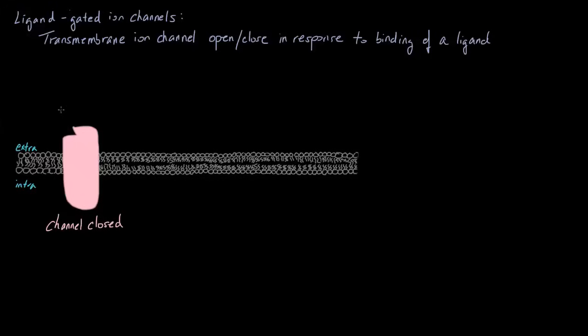So let's say we have a ligand that looks like this. This ligand can bind in there, and you'll notice that the shape of our ligand is complementary to the shape of our channel, and so it fits right in there.